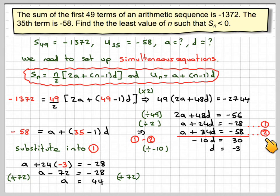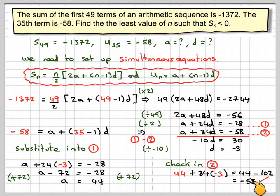We should just check that in equation 2 that it works out. So using A is 44 and D is minus 3, we're going to have that 44 plus 34 times minus 3 is equal to 44 minus 102, which gives me minus 58, which is what I wanted. So that agrees. So I know that the first term is 44 and the common difference is minus 3.